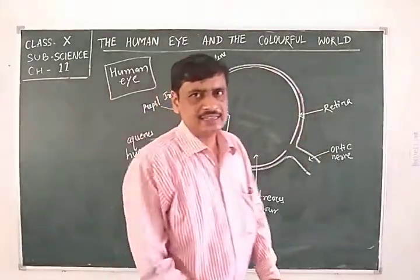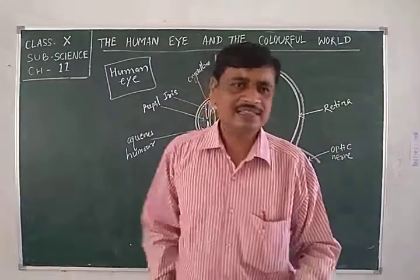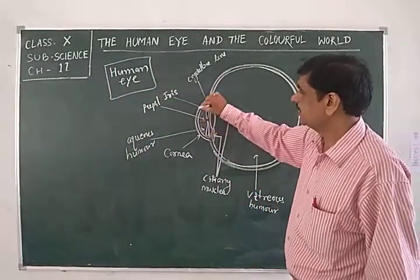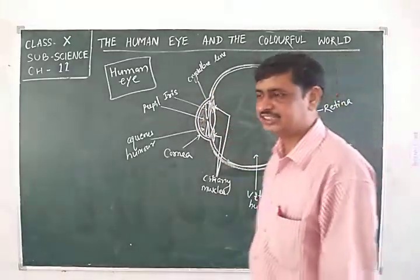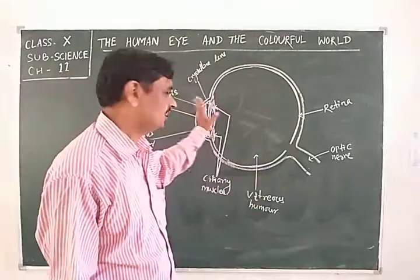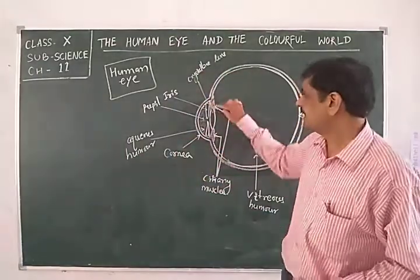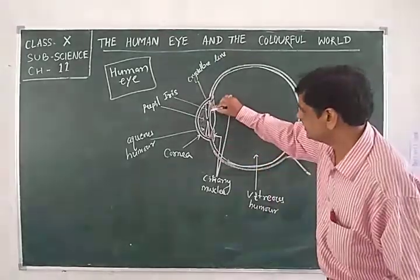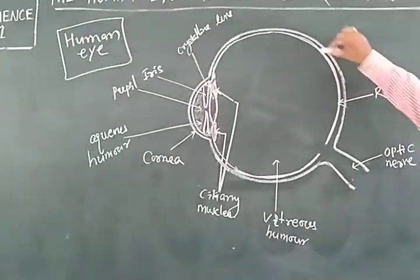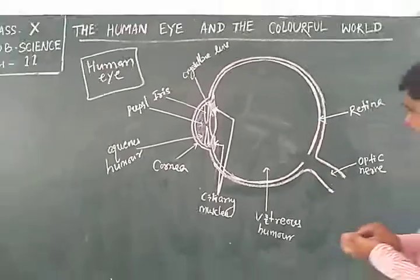The human eye is roughly spherical. The front part has a cornea, and most of the light is refracted through this cornea. After refraction through the cornea, light passes through the eye lens — also called the crystalline lens. Other parts include the iris, ciliary muscles, retina, vitreous humor, and optic nerve.